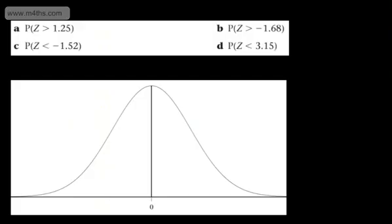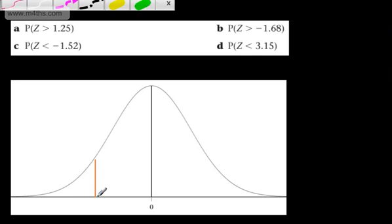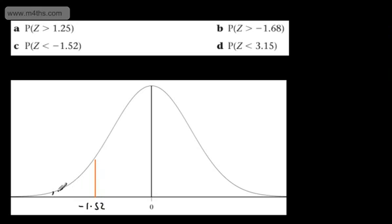Let's go for the next one. The probability that Z is less than negative 1.52. So let's get up negative 1.52, and we'll place it just here. So this time, what we want is the following. So this is going to be negative 1.52. So I'm interested now in this area right here.